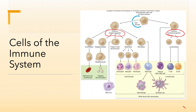Myeloid progenitors will eventually become red blood cells, platelets, mast cells, granulocytes, and monocytes in their immature form, which eventually mature or are activated to become macrophages or dendritic cells. Lymphoid progenitors become your natural killer cells, T cells, and B cells.